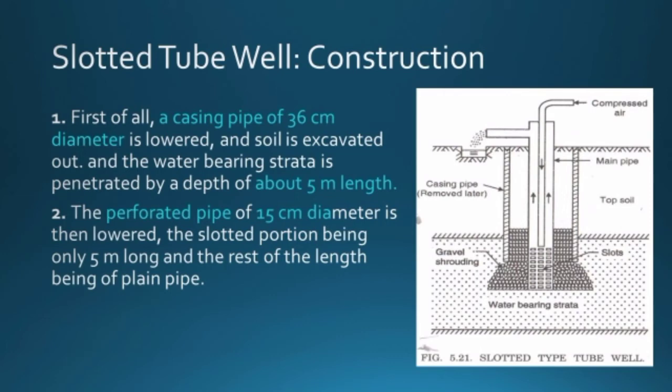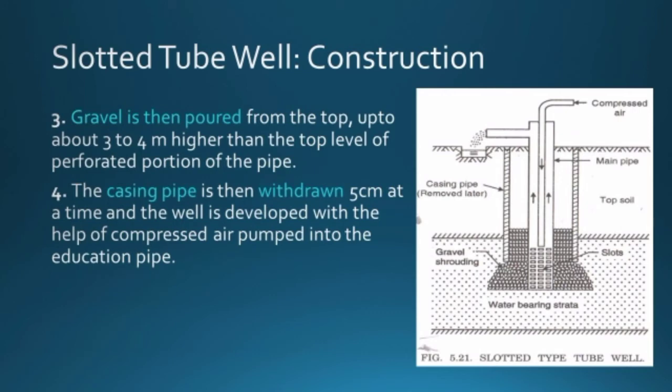Next, the perforated main pipe of 15 cm diameter is lowered inside the casing pipe, with the slotted portion being only 5 meters long and the rest plain pipe. Gravel is then poured from the top to 3 to 4 meters higher than the top of the perforated portion, filling the space between the main pipe and casing pipe. The casing pipe is then withdrawn 5 cm at a time so that no soil particles are dislodged.